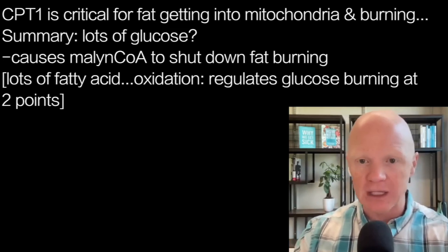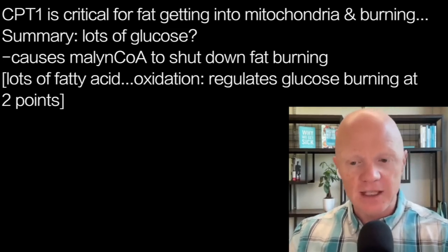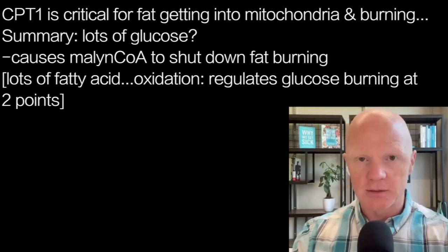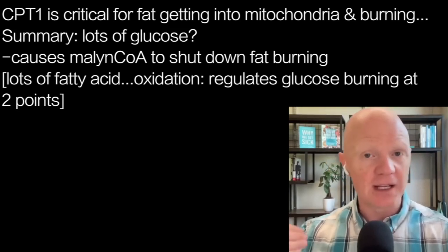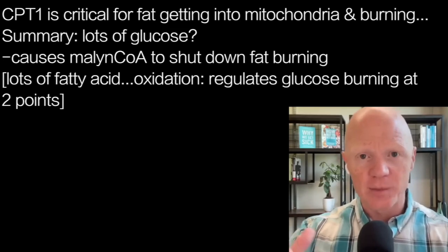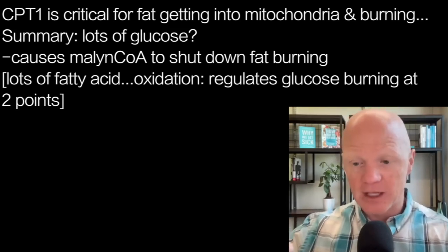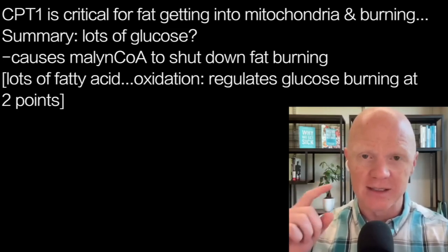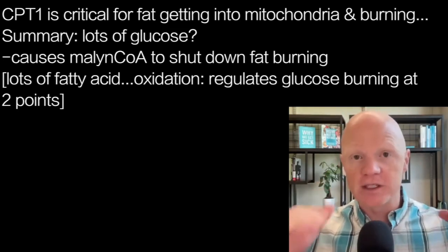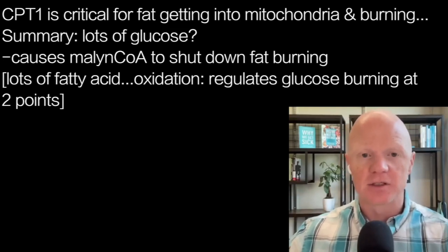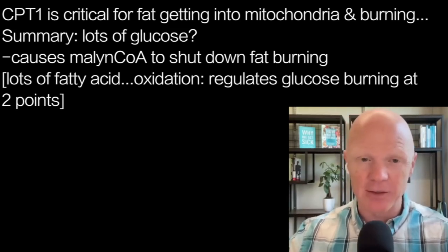That's the one point of regulation. It's a little more simple than the reciprocal regulation outlined earlier, where fatty acid oxidation regulates glucose burning at a couple of different points. Glucose burning inhibits fat burning at only that one point — it's inhibiting CPT1. And it works because fats have that one singular entrance. Nothing happens really until they can get into the mitochondria.